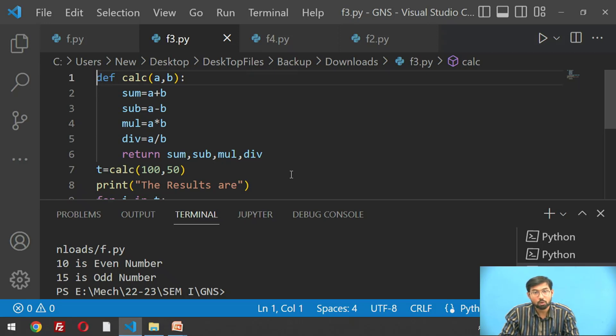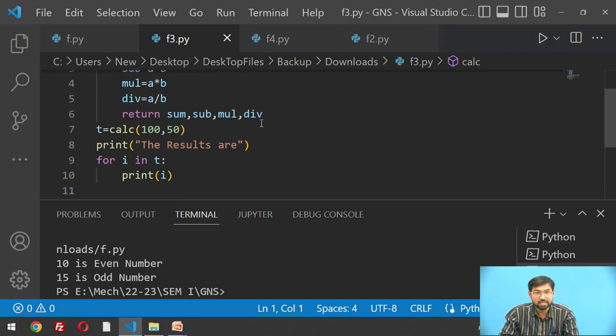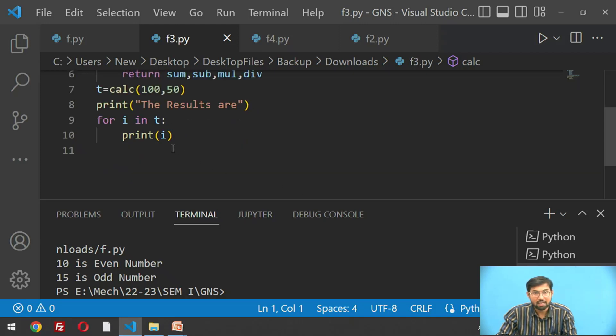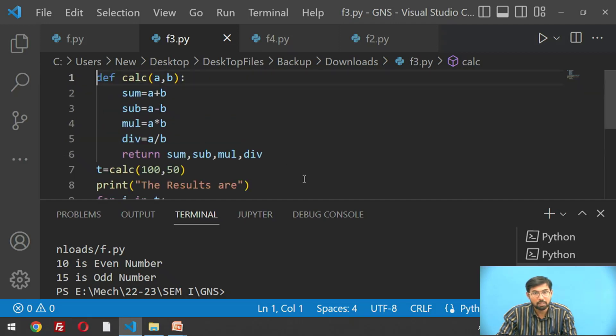Return statements are used for different calculations. T is another function name where we use calculator(100, 50), that means we are using these two numbers a and b. A is 100, b is 50. We print the results using for loop i in t and print i, it will print all the results.